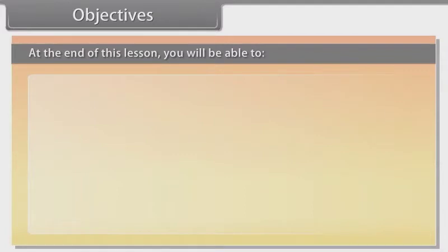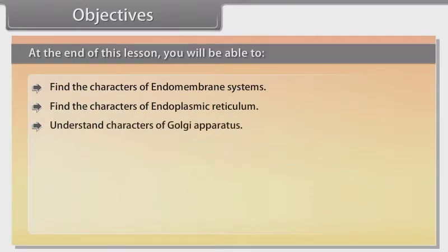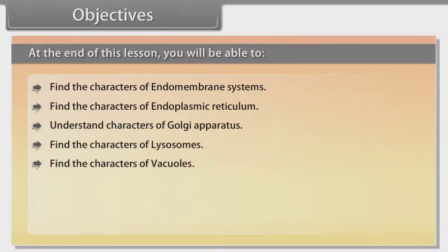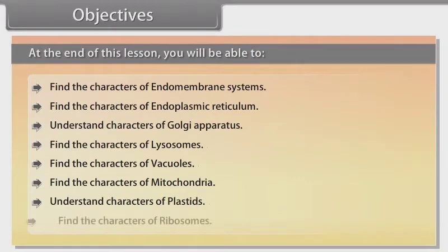At the end of this lesson, you will be able to find the characters of endomembrane systems, find the characters of endoplasmic reticulum, understand characters of Golgi apparatus, find the characters of lysosomes, find the characters of vacuoles, find the characters of mitochondria, understand characters of plastids, and find the characters of ribosomes.